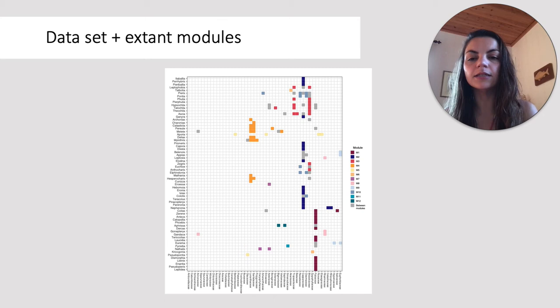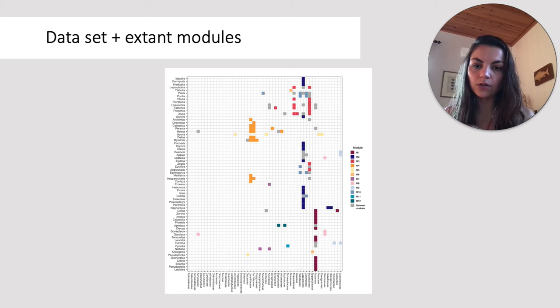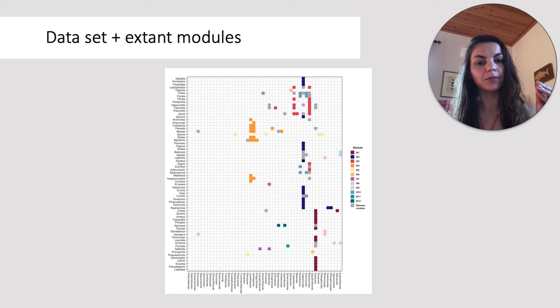The colors show the modules. Modules are groups of nodes — both butterflies and plants — that interact more with each other than with the rest of the network. For example, here we have a yellow module that concentrates interactions between certain butterflies and their host plants. But there are also interactions between modules: gray squares represent interactions between a butterfly and a plant that were assigned to different modules.